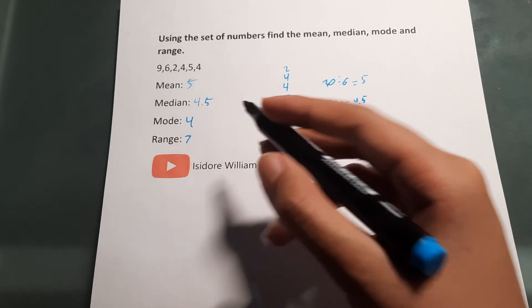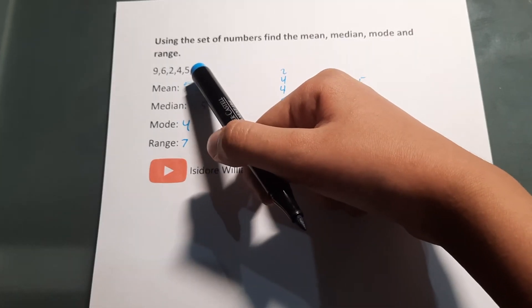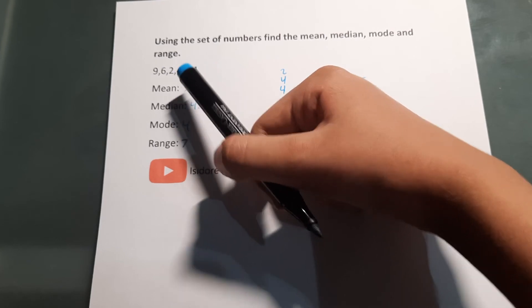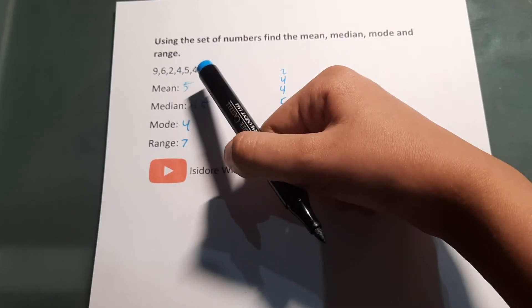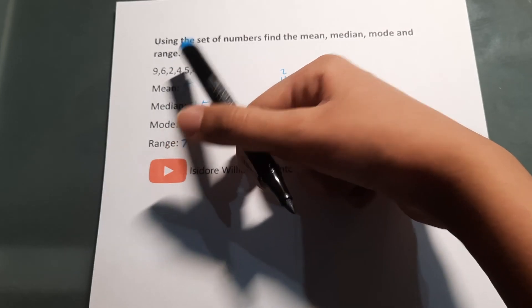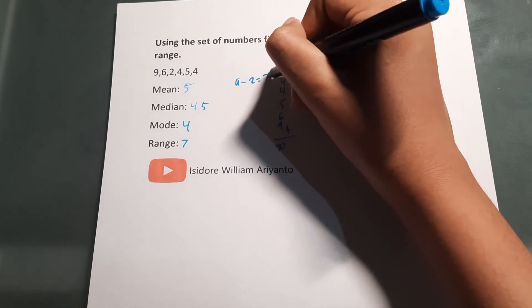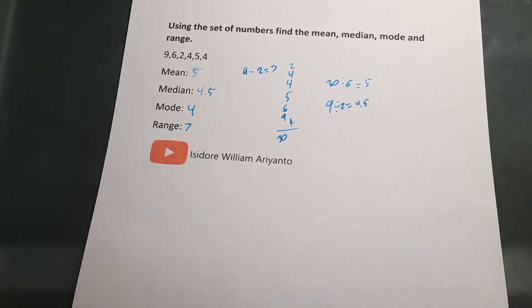The mode is the most occurring number in the set of numbers, so in this case 4. The range is from the smallest to the biggest, or in this case 9 minus 2 equals 7.